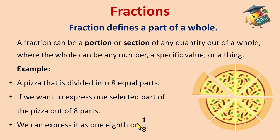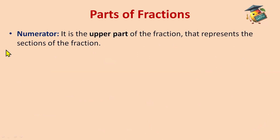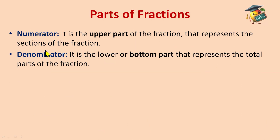Now let's learn about the parts of the fraction. The first part is the numerator. It is the upper part of the fraction that represents the sections of the fraction — whatever sections the fraction is divided into, or whatever part is shaded. So just remember: the numerator is the upper part of the fraction. The denominator is the lower or bottom part that represents the total parts of the fraction.